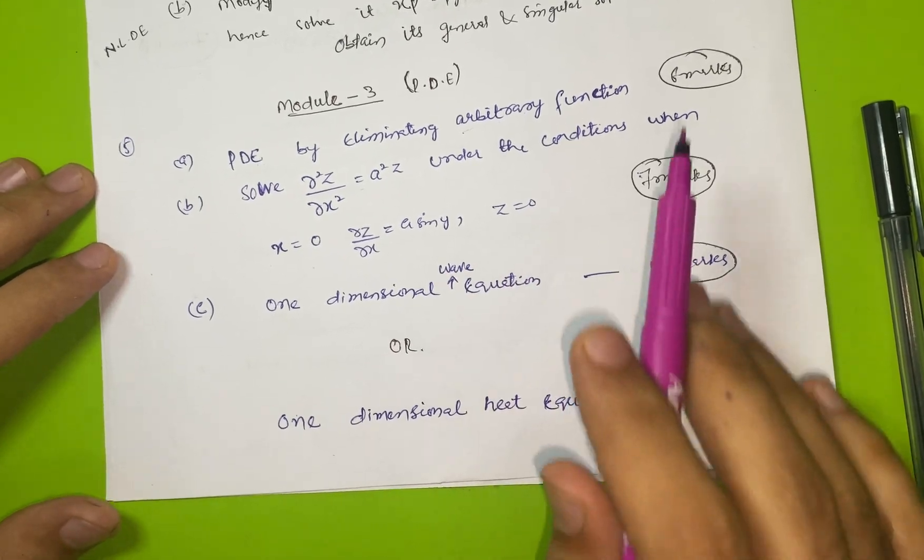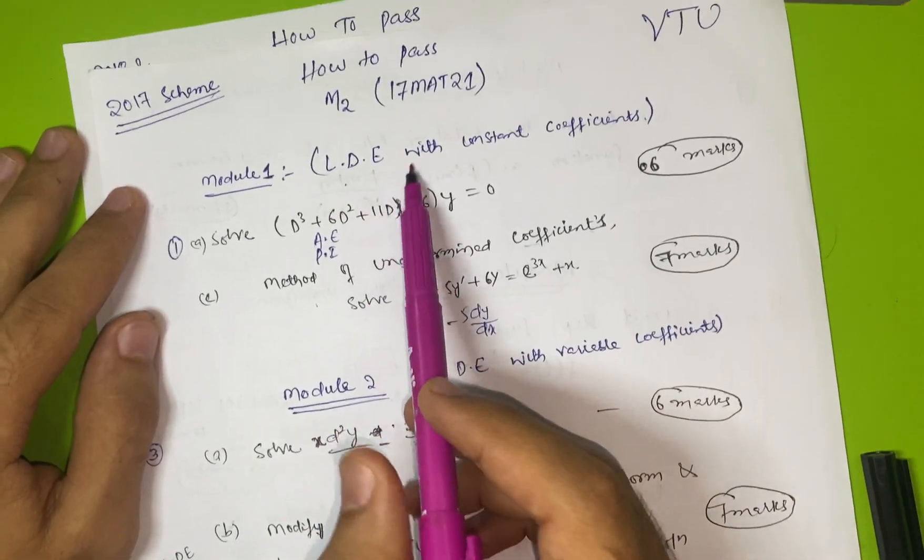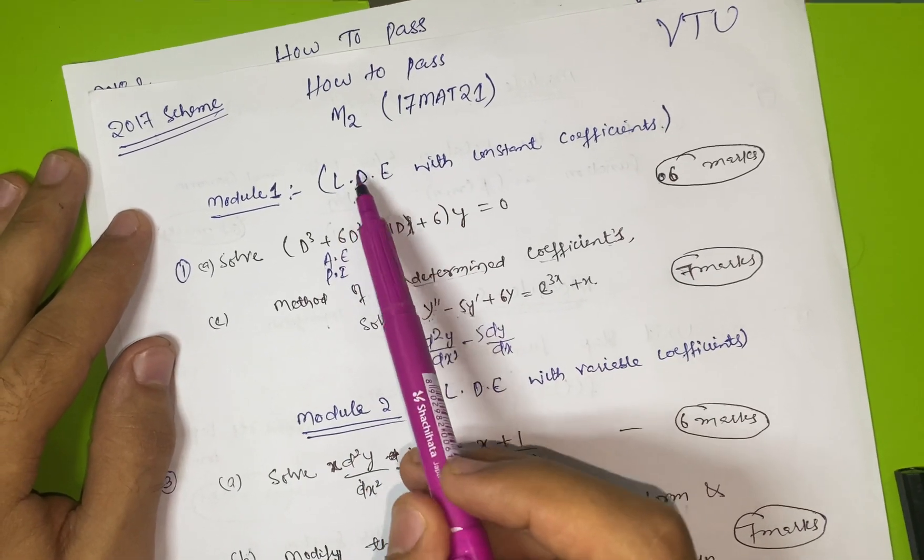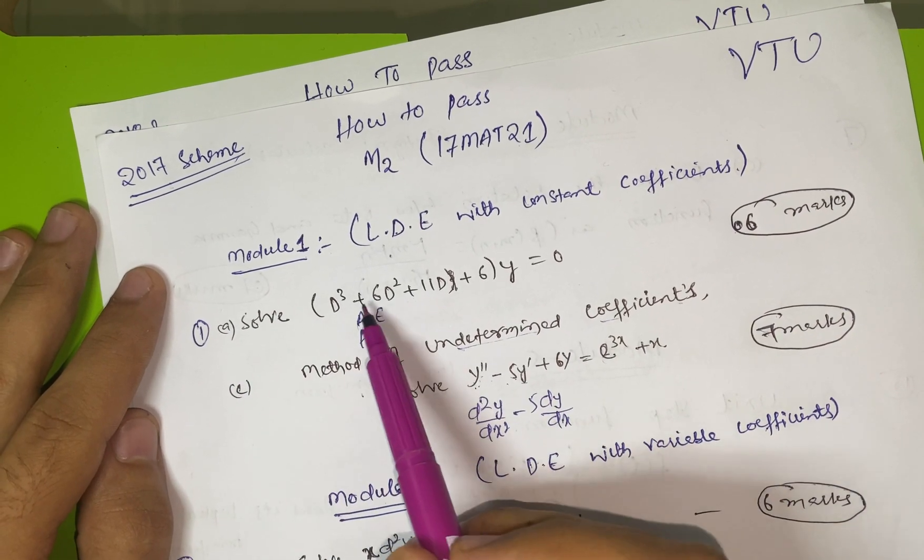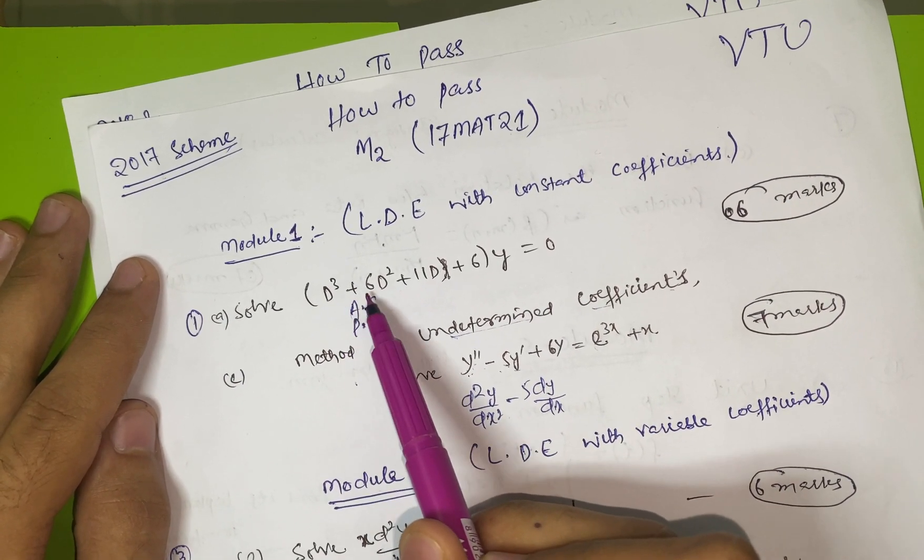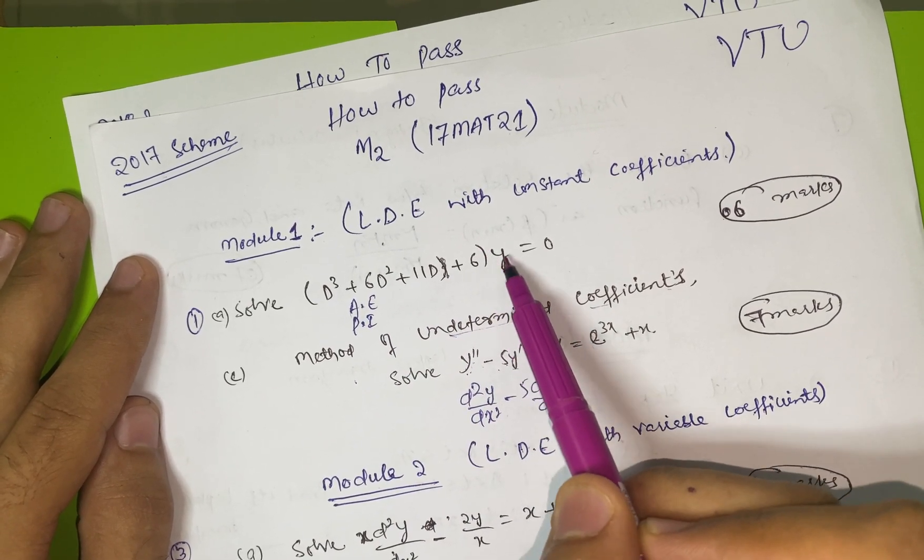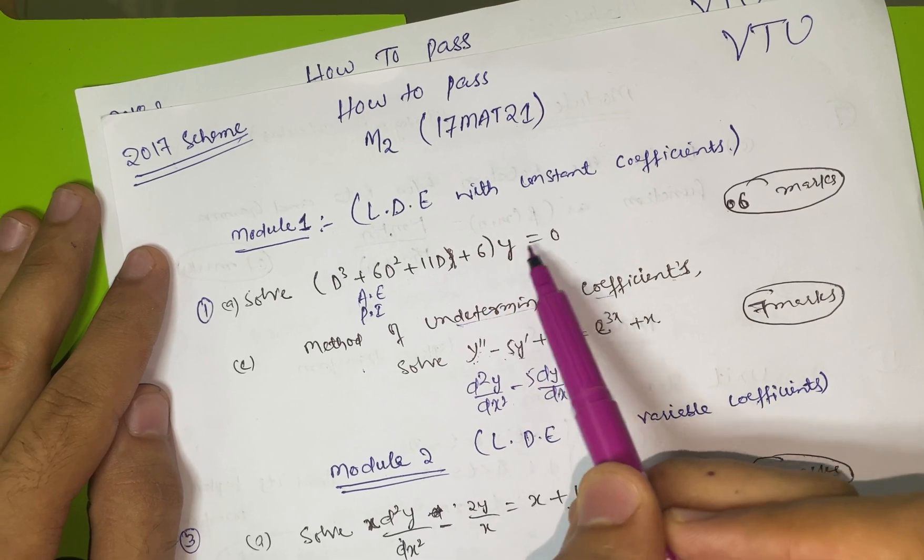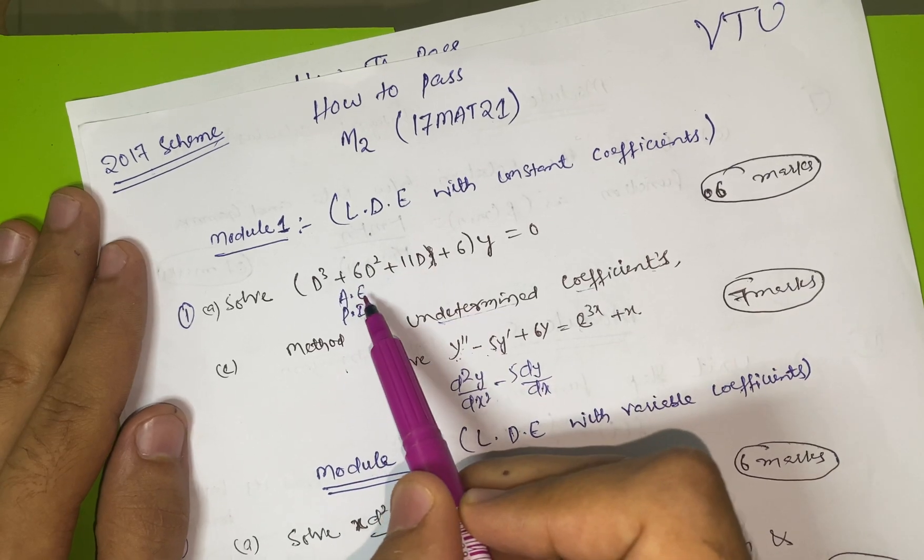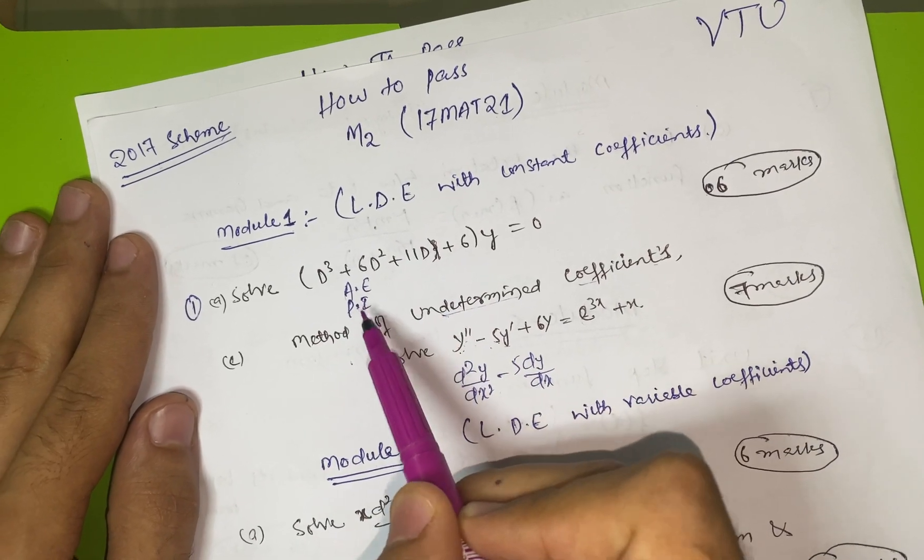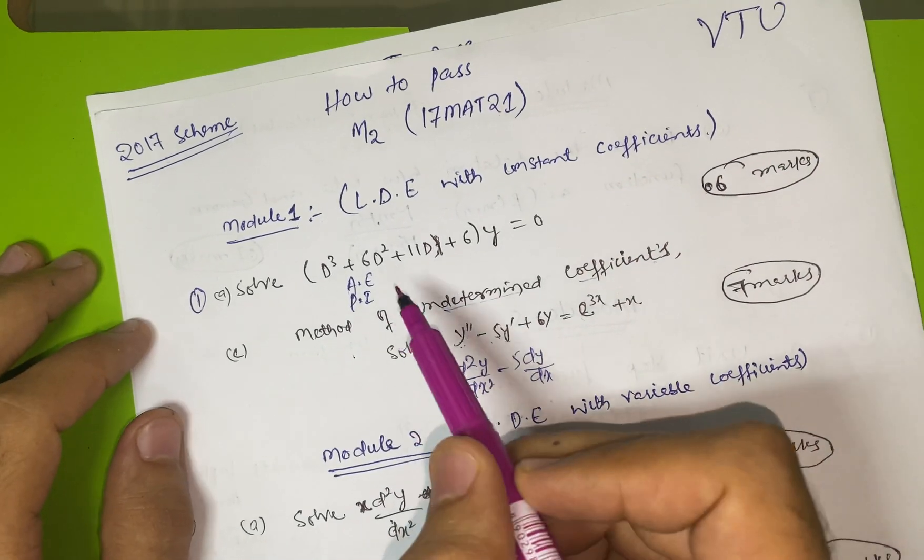Then check Module 1, it's also a simple concept. This is linear differential equation with constant coefficients. The first question will be solve (D³ + 6D² + 11D + 6)y = 0. This is an example from previous year paper. In this question you have to play with auxiliary equation and particular integrals. The solution will be just four or five lines, enough to tackle this question.